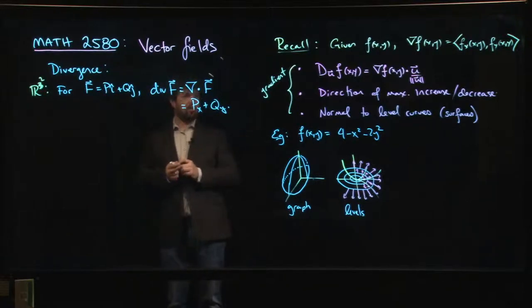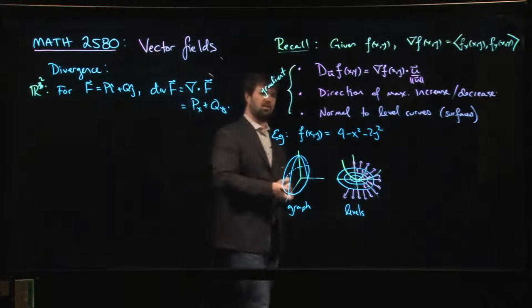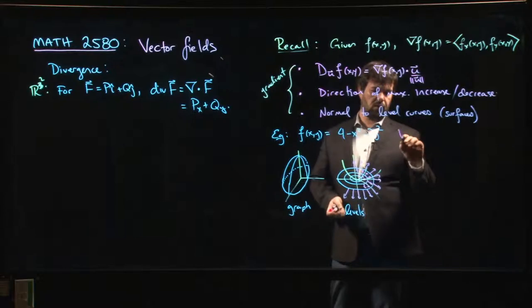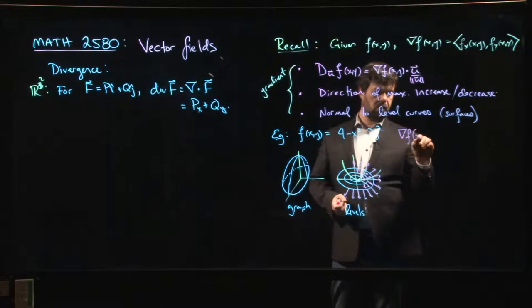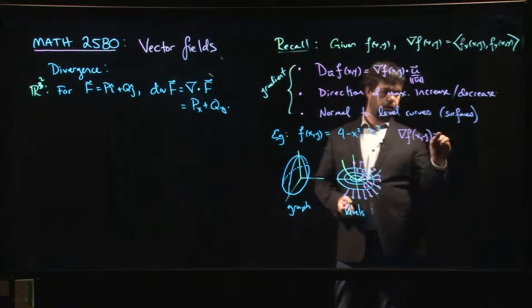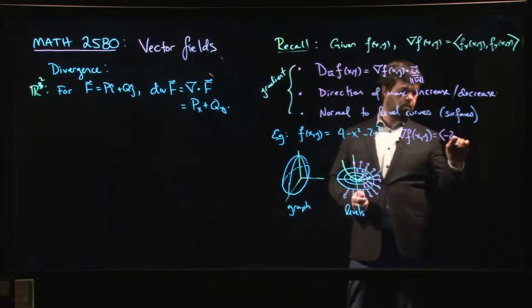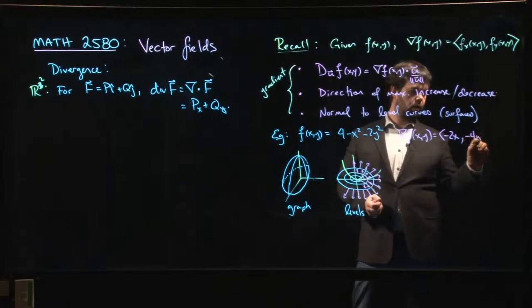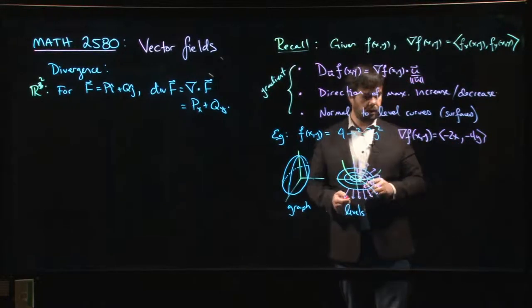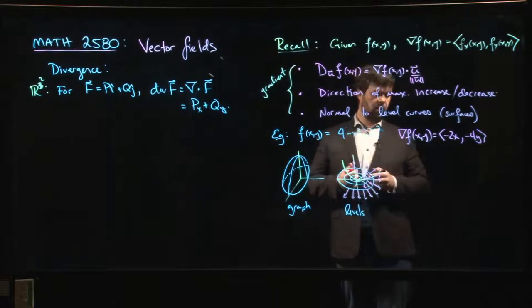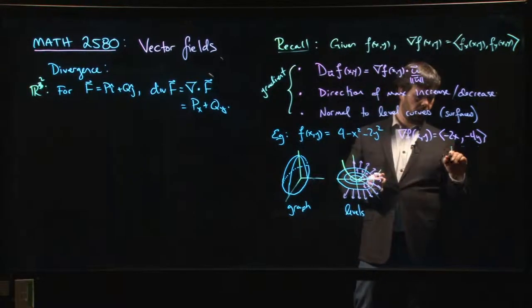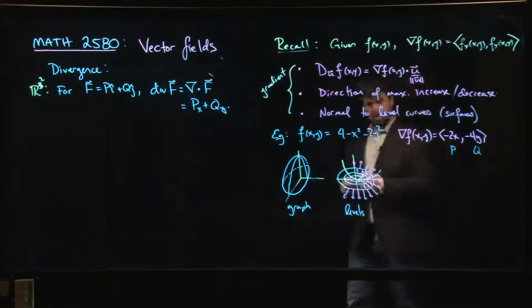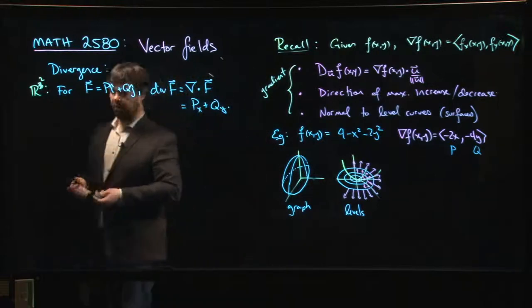Now, while we're at it, why don't we do this gradient example here? We didn't actually get around to computing the gradient. What is the gradient for this function? The gradient for this function is minus 2x and then minus 4y. So we could take this as a vector field. We could think of this as our p and our q, and we could compute the divergence of this vector field.